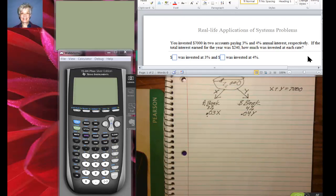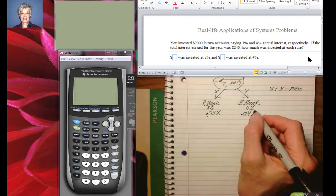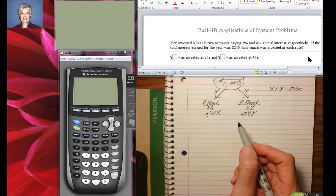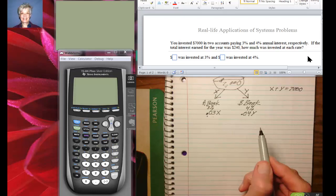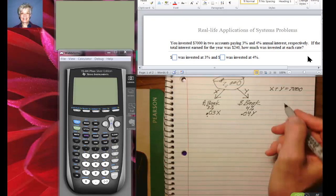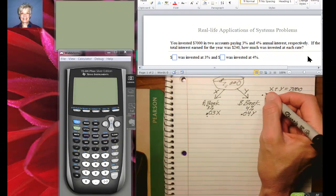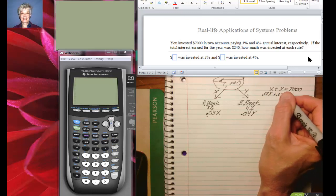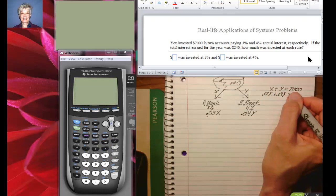All right, so how much does that interest and that interest add up to? Well, our problem says $240, so that gives us our second equation: 0.03X plus 0.04Y is going to equal $240.